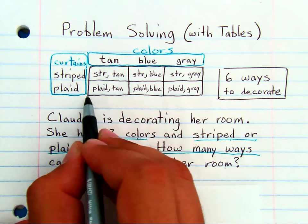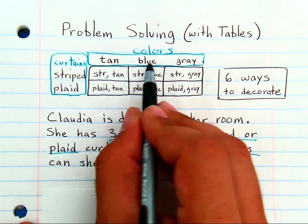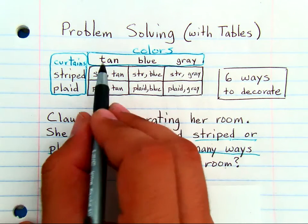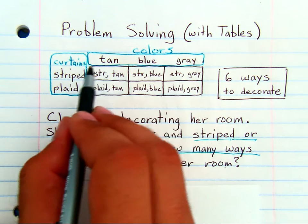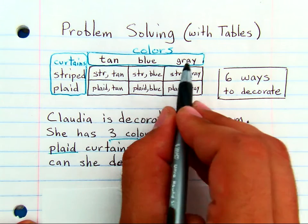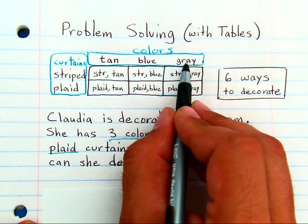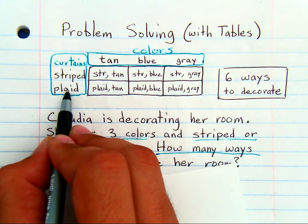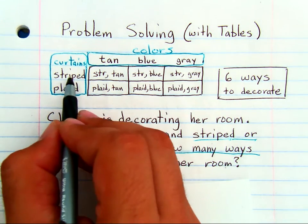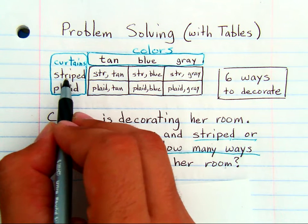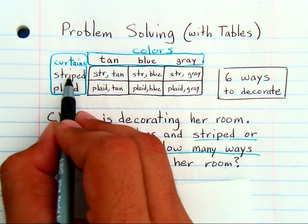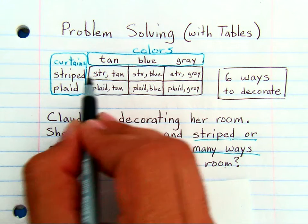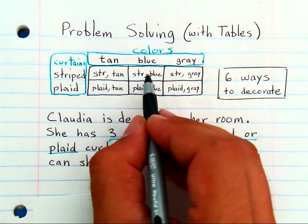So this table that you see shows all three colors - I picked tan, blue, and gray - but it shows how each color can be combined with the type of curtains she has to choose from. So here, if she chooses striped curtains, she can combine that with the color tan, or she can have striped curtains with the color blue, or striped curtains with the color gray.